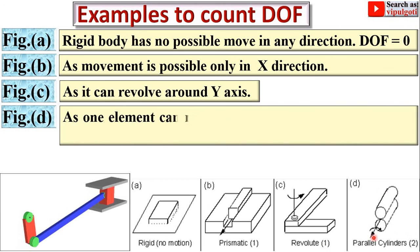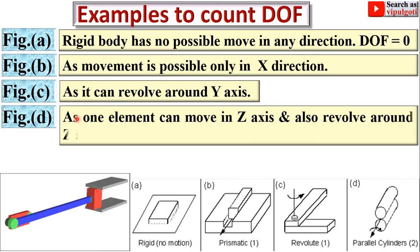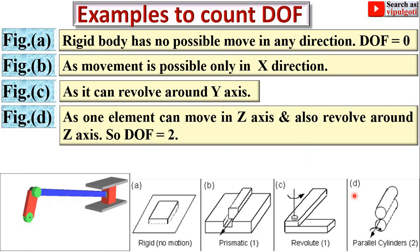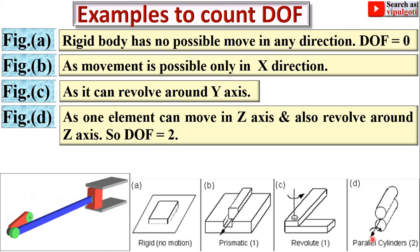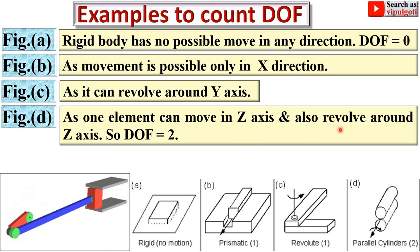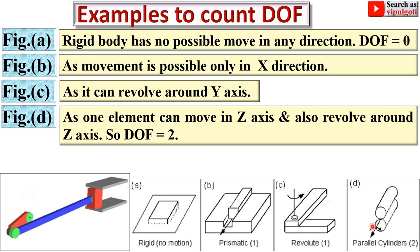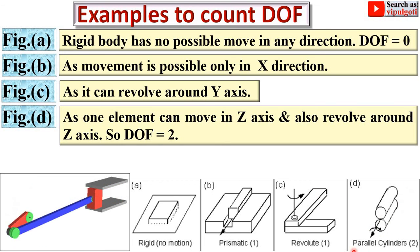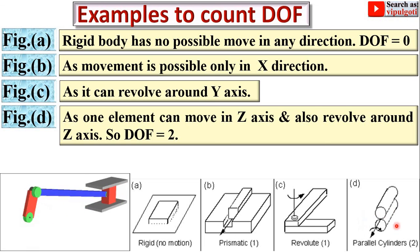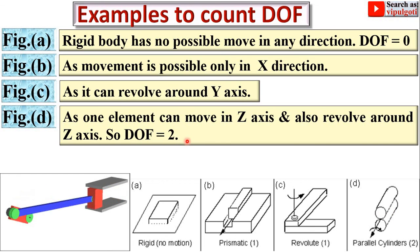Next, consider figure D: one element can move along the z-axis — as you can see from the arrow direction — and can also revolve about the z-axis. So there is one translatory motion and one rotational motion, giving a degree of freedom equal to 2.